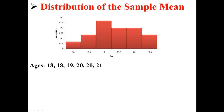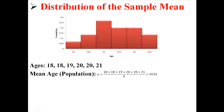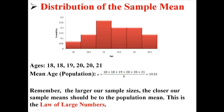This is the distribution of the sample mean alongside our original ages. If we take that population of ages and calculate the mean, we find a mean of 19.33. Looking at the distribution we've created, we can see that the mean is about 19.33 — about 19. The most likely event in our distribution is 19, so it's a pretty accurate representation. Remember that the larger our sample size is, the closer our sample mean should be to the population mean. This is the law of large numbers.